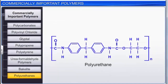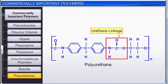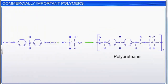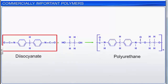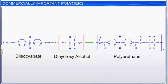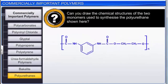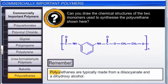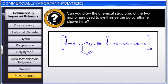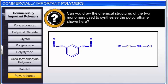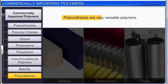Polyurethanes are a class of polymers with a urethane linkage. In general, they are made from two monomers: a diisocyanate and a dihydroxy alcohol. Polyurethanes are very versatile polymers whose many forms include foams, elastomers, and fibers.